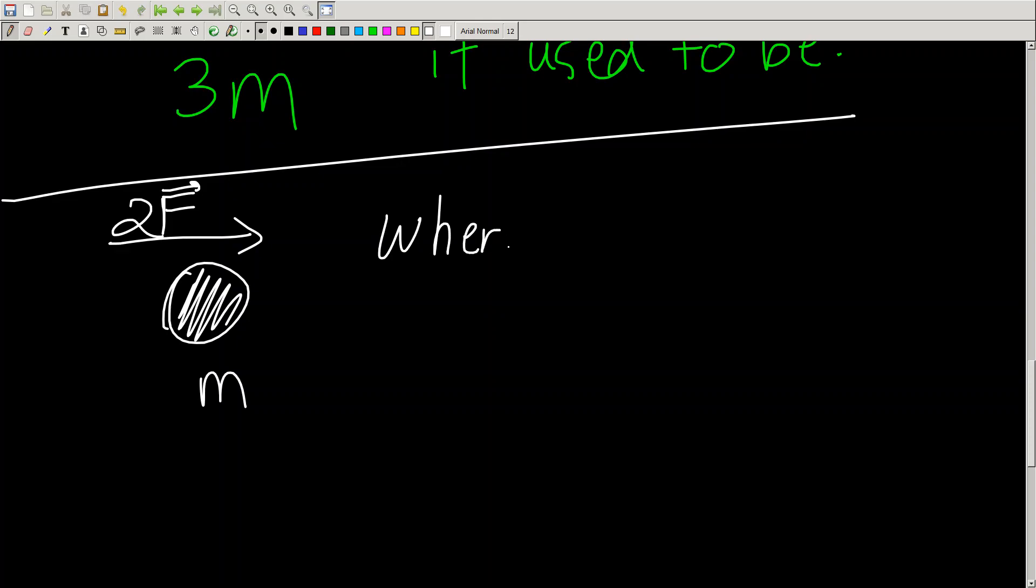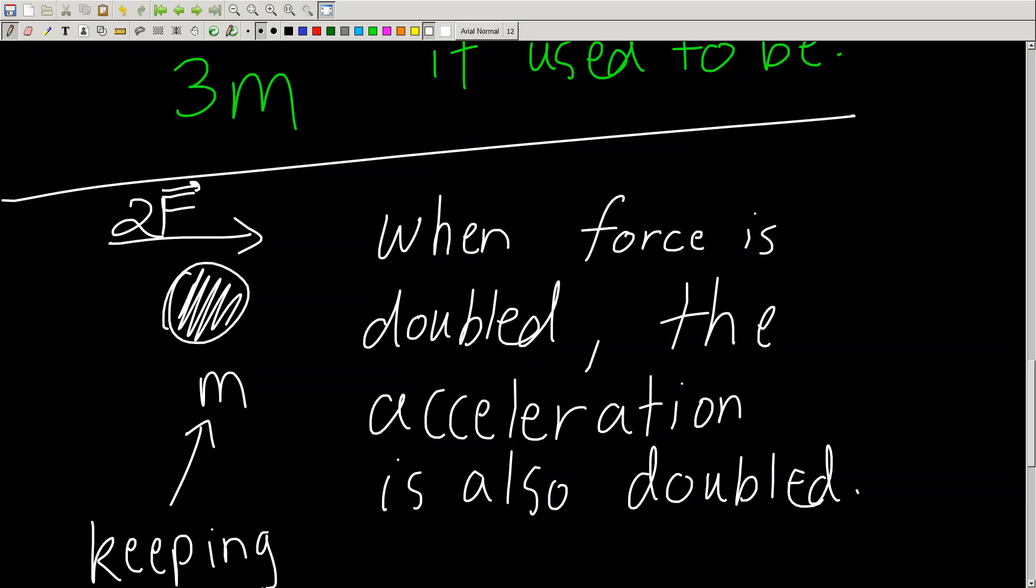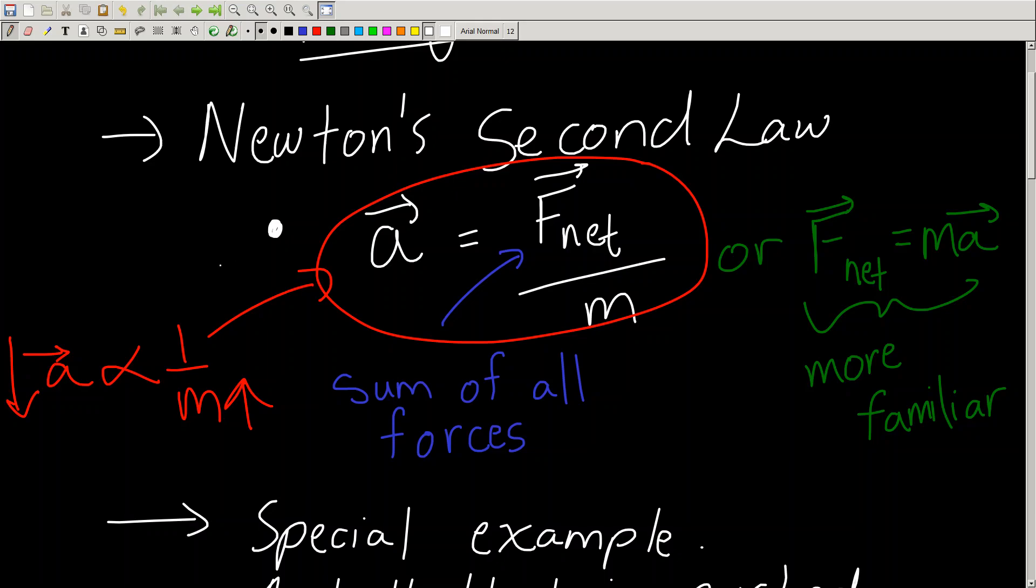When force is doubled, the acceleration of the object turns out to also be doubled. If the force is tripled, the acceleration is tripled. And by the way, we're keeping mass constant in this case. So keeping mass the same. All we're changing is the force. What we're analyzing is what the effects are on the acceleration due to an increased force. And we find that the acceleration is increased by the same multiple. If the force is doubled, the acceleration is also doubled.